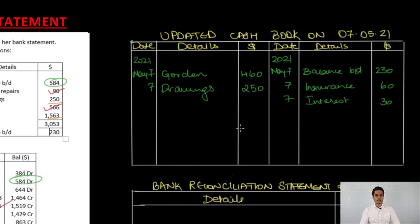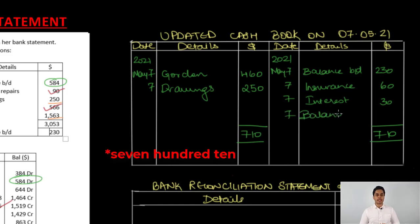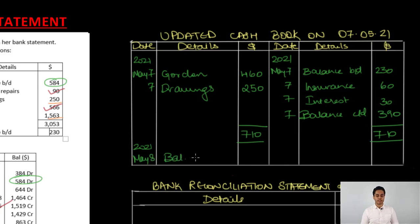Once we are done with all these transactions, we balance our updated cash book. Since the debit side is greater than the credit side, we take a total on the debit side of $7,010 and get a balance carried down on the credit side of $390. This balance as per the updated cash book will be the starting point for preparation of the bank reconciliation statement.